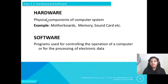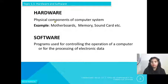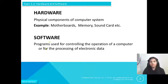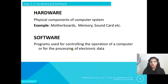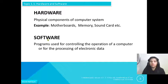Hardware are the physical components of your computer system that are tangible and physically exist, just like motherboard, memory, sound card, printer, projector, and monitor. On the other hand, software are the programs used for controlling the operation of a computer or for the processing of electronic data. Programs you use for yourself or for maintenance of the computer system are software; physical components are hardware.